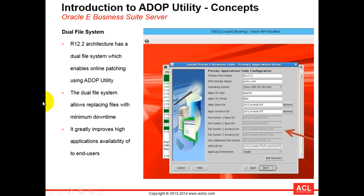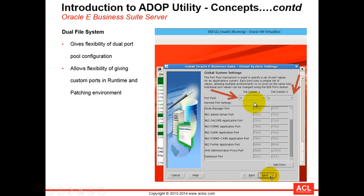The dual file system also gives you the flexibility to specify different ports for each file system. In the rapid install, this is where we specified different ports for file system one and file system two. This helps free up ports for your running file system and allows custom ports according to your server configuration for the patch file system and vice versa, giving tremendous flexibility when running different application tier nodes on your Oracle E-Business Suite system.